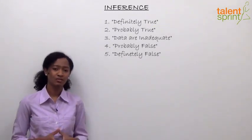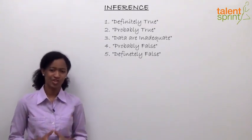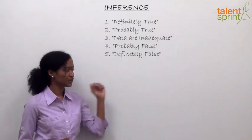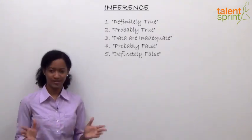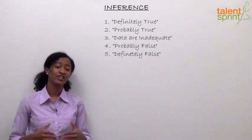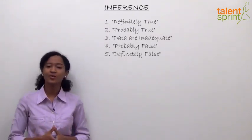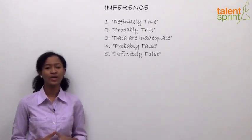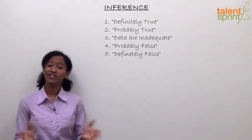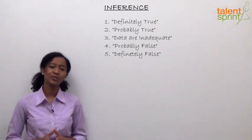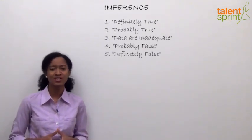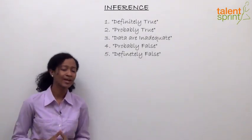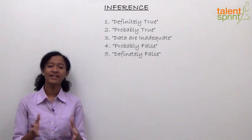If the data is inadequate or insufficient and we need some more information, then we will click option three — data inadequate or insufficient. For option four, if the statement inferred is probably false, we click option four. Option five is when the statement inferred is definitely false, meaning we cannot possibly draw this inference because it contradicts the facts given in the passage — click option five, definitely false.